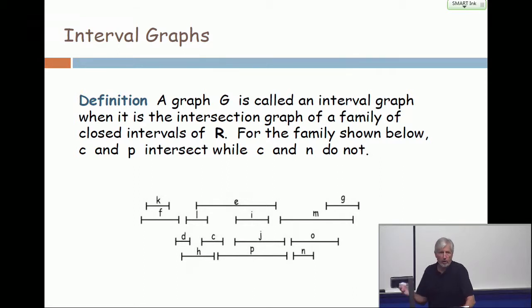But C and N do not. All right. I didn't draw the graph. Why do I have to draw the graph? You can see the graph, can't you? There's 1, 2, 3, 4, 5, 6, 7, 8, 9, 10, 11, 12, 13, 14, 14 vertices, and I don't know, 45, 60, I don't know, edges. But you can see the graph, can't you?